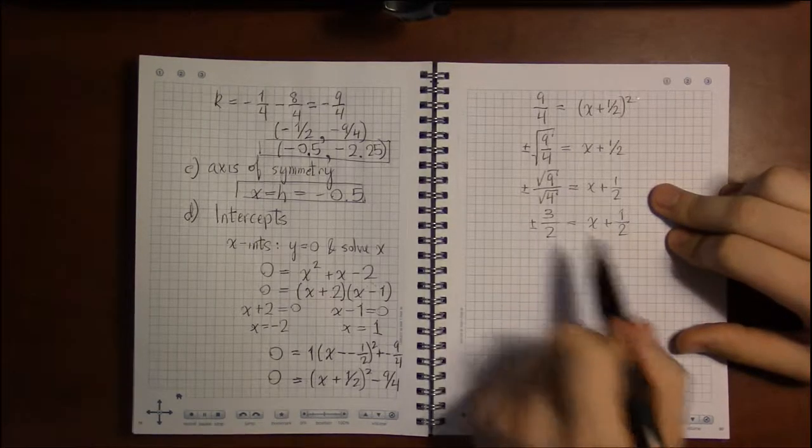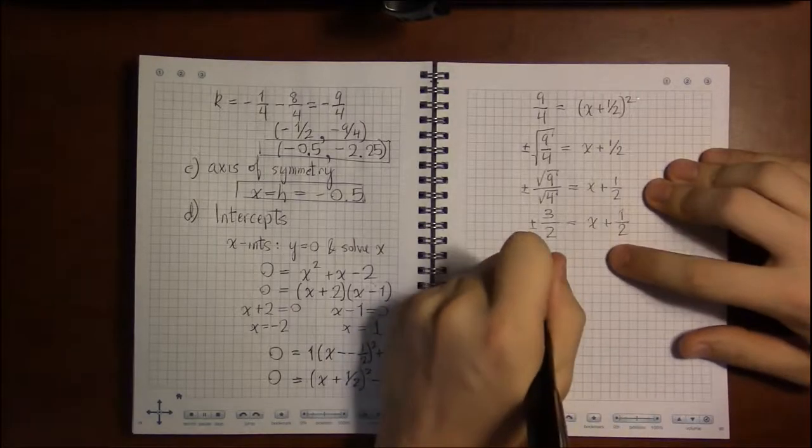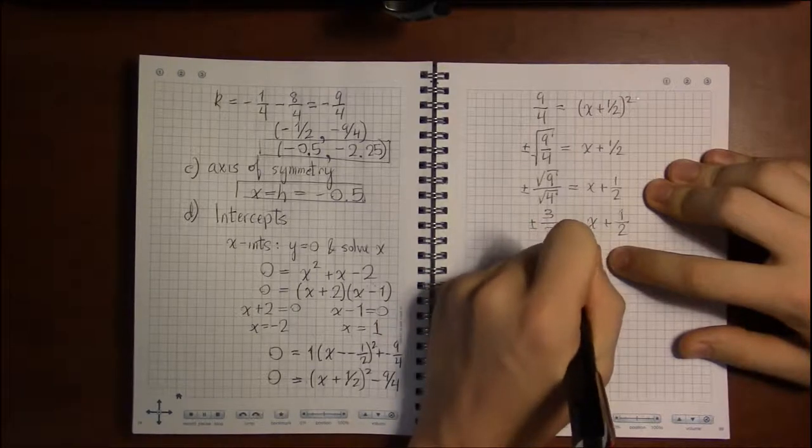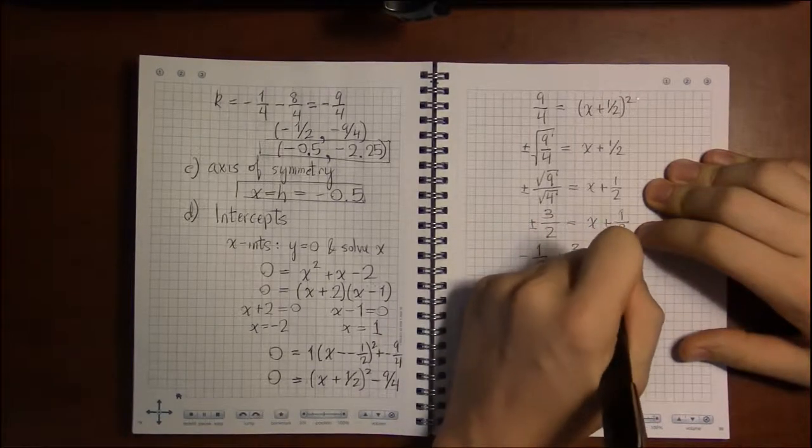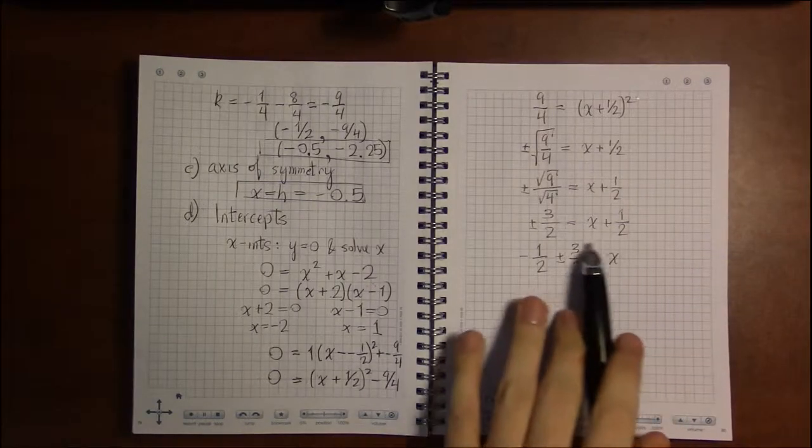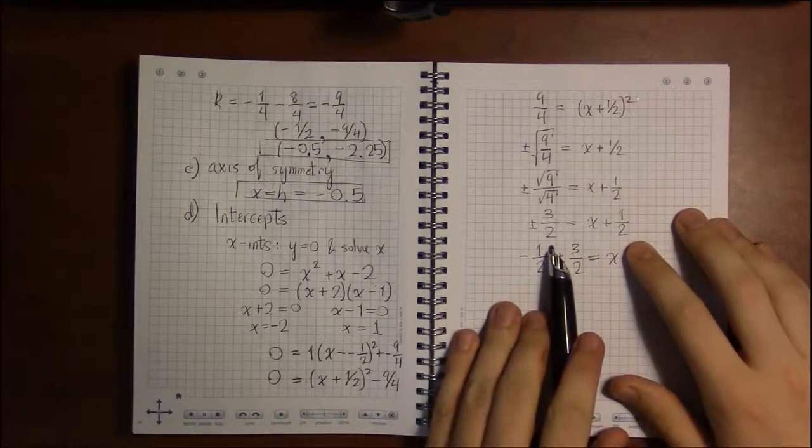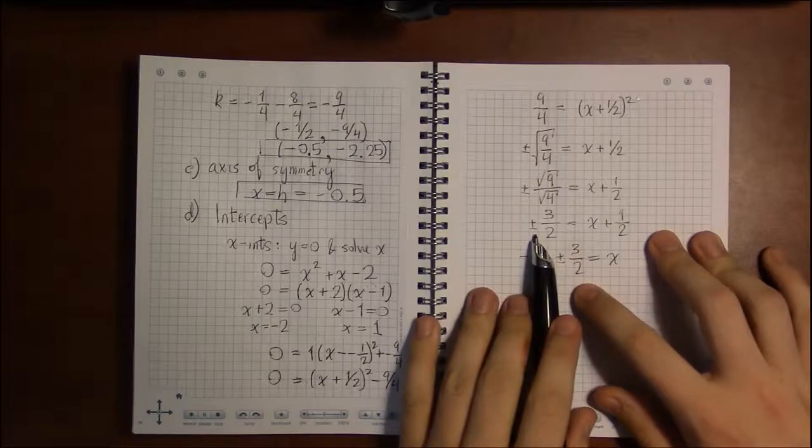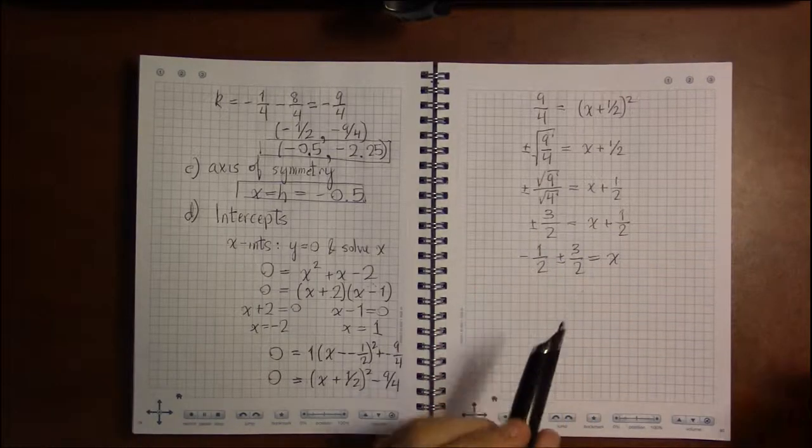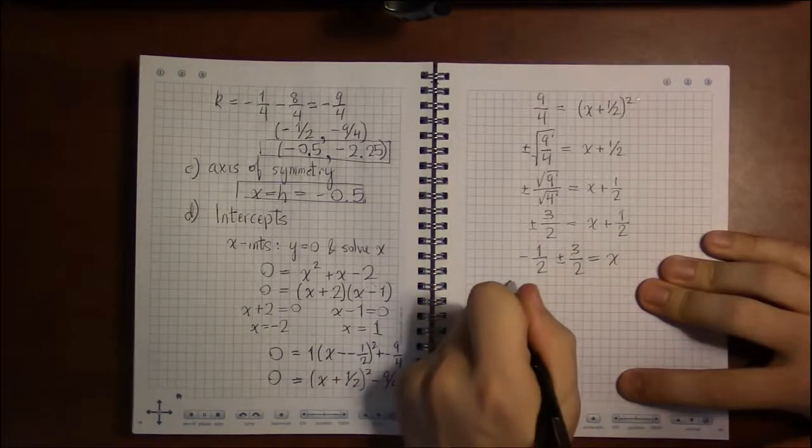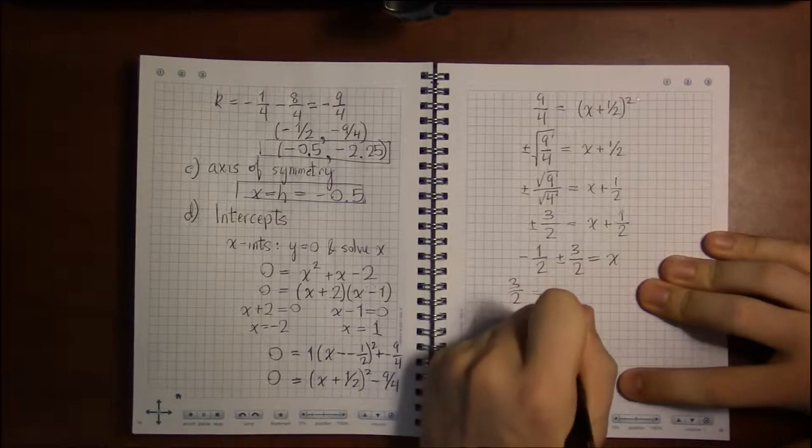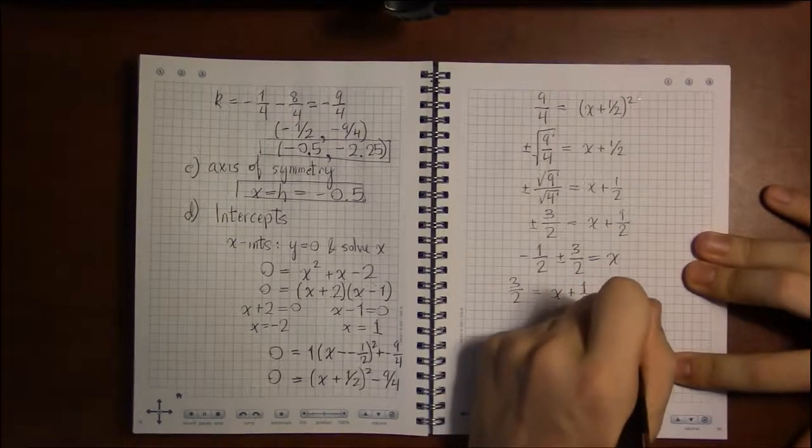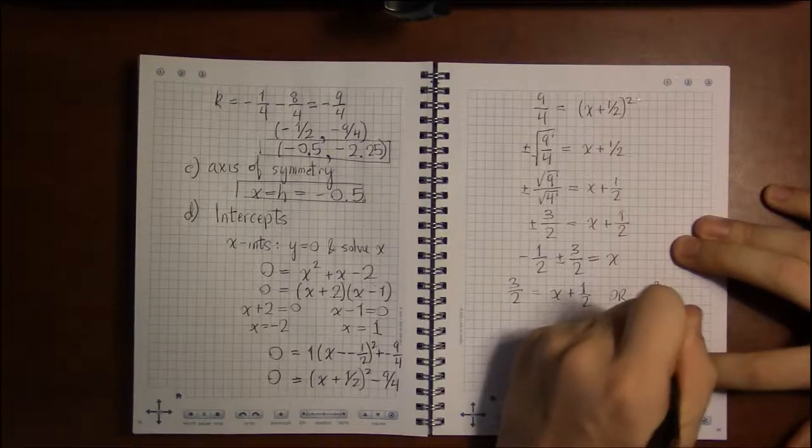So, finally, to get x by itself, we'll subtract 1 half from both sides. Now, I can't exactly combine 1 half and 3 quarters because I don't know whether it's plus 1 half or minus 1 half. If you want, at this point, you can break it down and solve two equations. One where 3 halves gets the plus and another where 3 halves gets the minus.